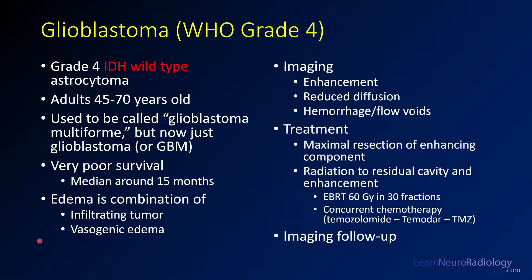This was a case of glioblastoma. These are IDH wild type grade four astrocytomas, common in adults, usually in middle to later age. They've gotten rid of the phrase 'multiforme,' although many people continue to use the phrase GBM. They have very poor survival — a little more than a year even with maximal therapy. You typically have an enhancing tumor in the center, which may have reduced diffusion in the enhancing portions. You can have hemorrhage, vessels, and flow voids. Treatment involves resecting as much of the enhancing component as possible and then giving radiation to the remaining component. These patients get imaging follow-up about every three to six months after treatment.